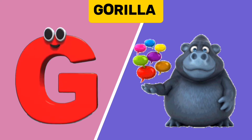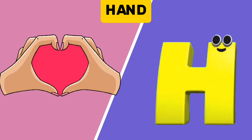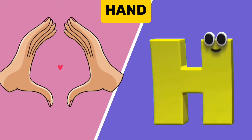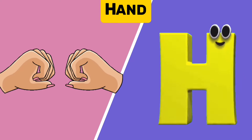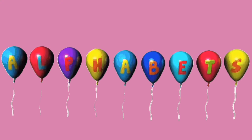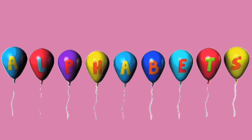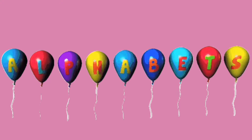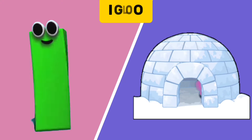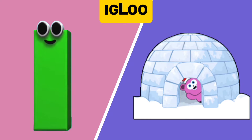G is for Gorilla. G, G. Gorilla. H is for Hand. H, H. It's the letters of the alphabet!